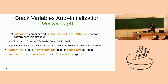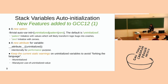Pattern initialization is usually used in the development stage for debugging purposes, while zero initialization is used in the production stage for security purposes. GCC needs this feature to compete with other compilers.